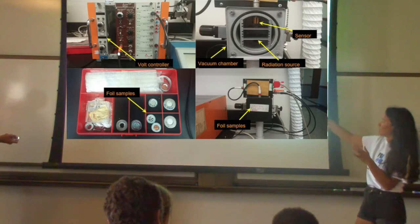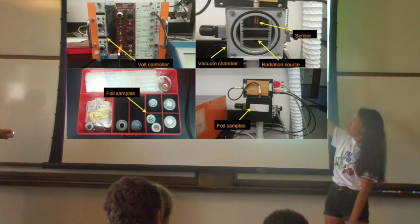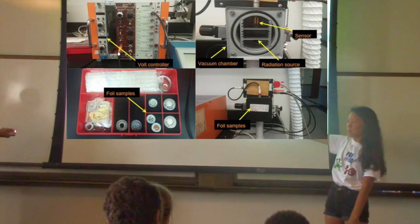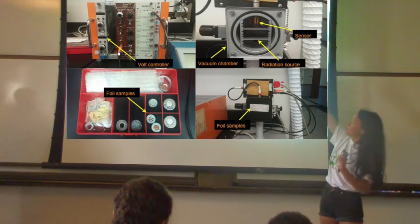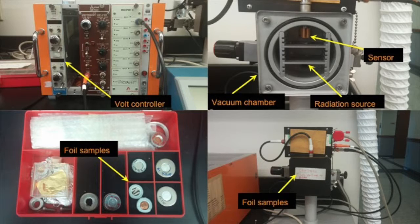We created basically a vacuum within that chamber and covered it to prevent photons from getting in, so that the sensor, which is up there, would only be reading the alpha particles coming in. We used those as the foil samples, and then we measured how many alpha particles hit that sensor and how much energy they had when they hit the sensor.